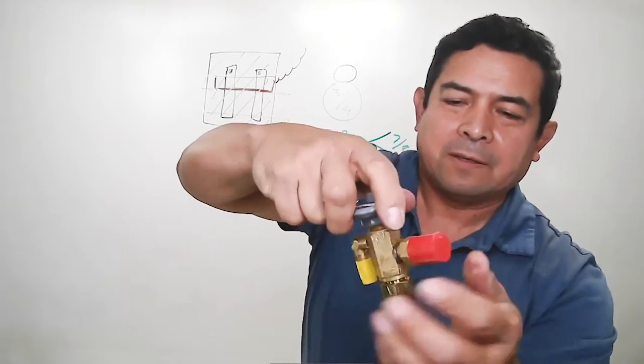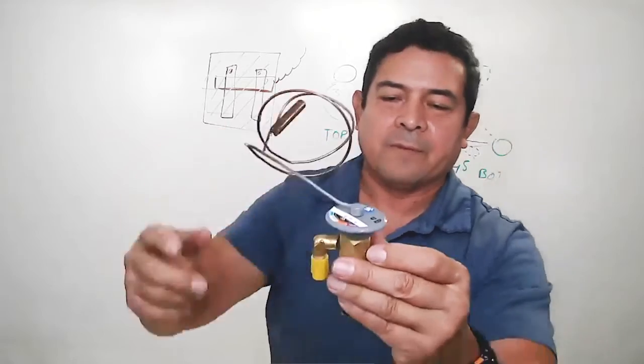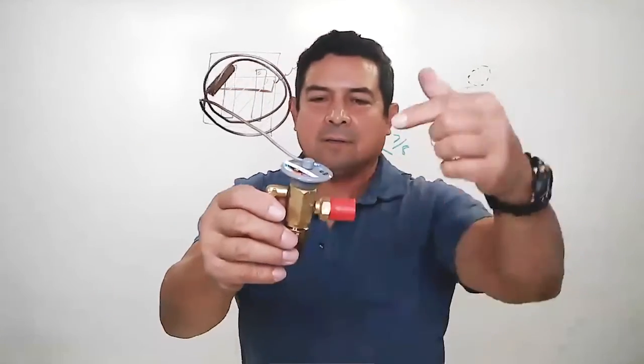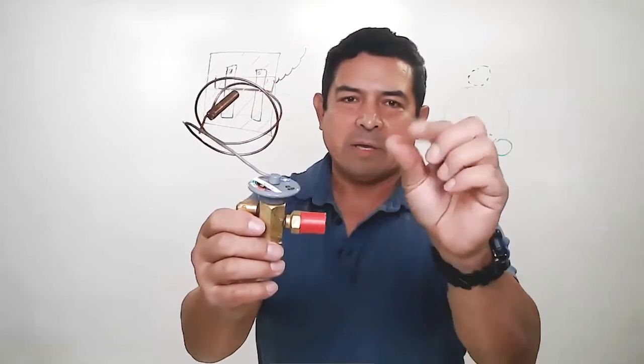The power head screws right in there like this. There we go. So now we're set to go. Well, sort of. These are not tight. In real life, they need to be very, very tight because you're going to have metal to metal contact. And we want to make sure that we do not have leaks.